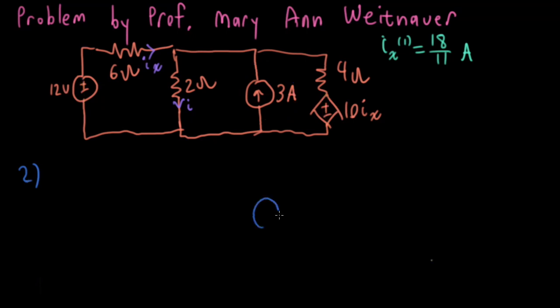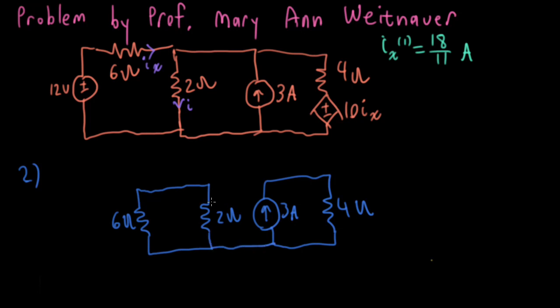All right, so I have my 3 amp source here, and that's now being split between a 4 ohm resistance, a 2 ohm resistance, and I'm going to draw this slightly differently. I'm going to write my 6 ohm resistance like this. So I have a 3-way current divider.